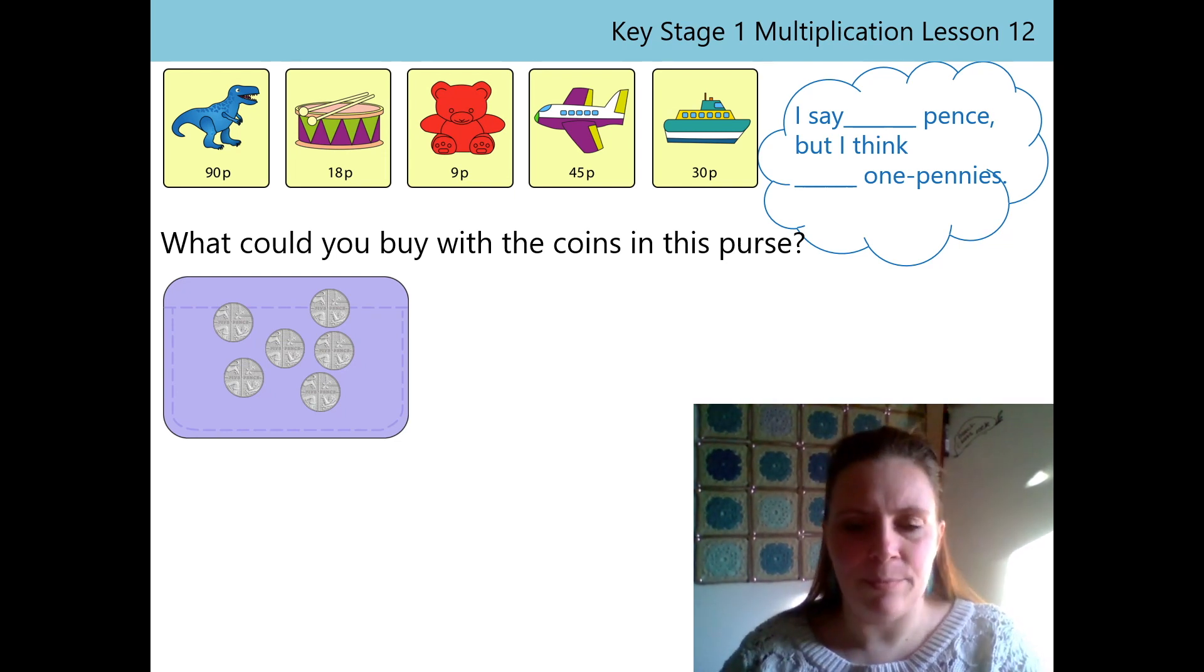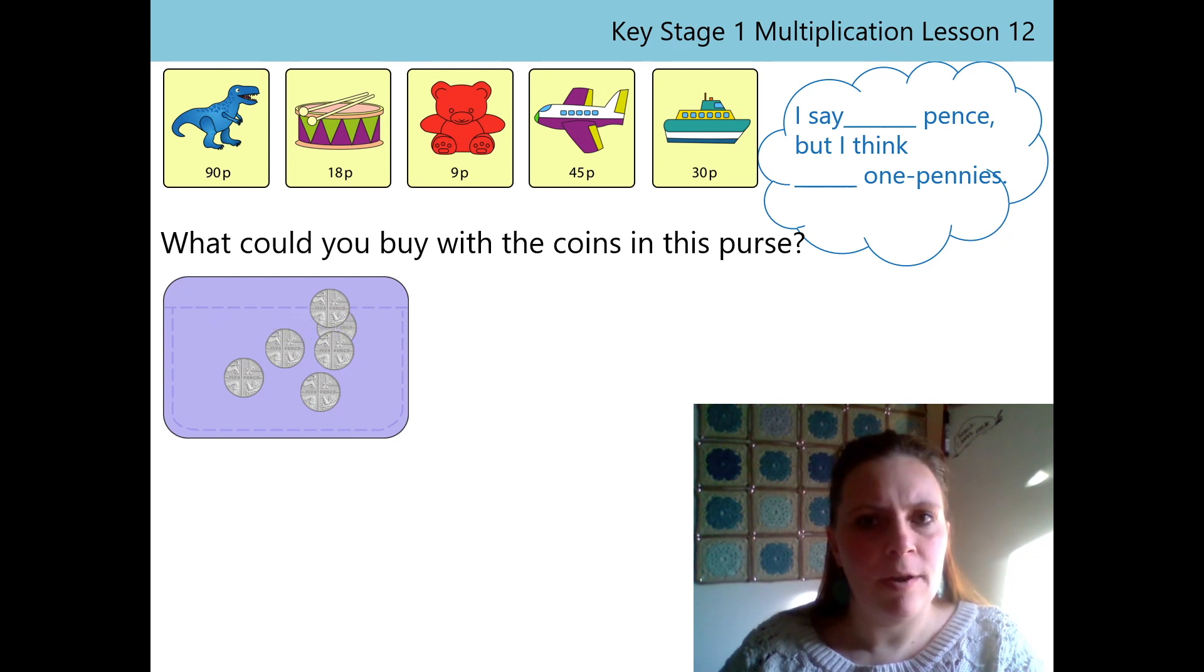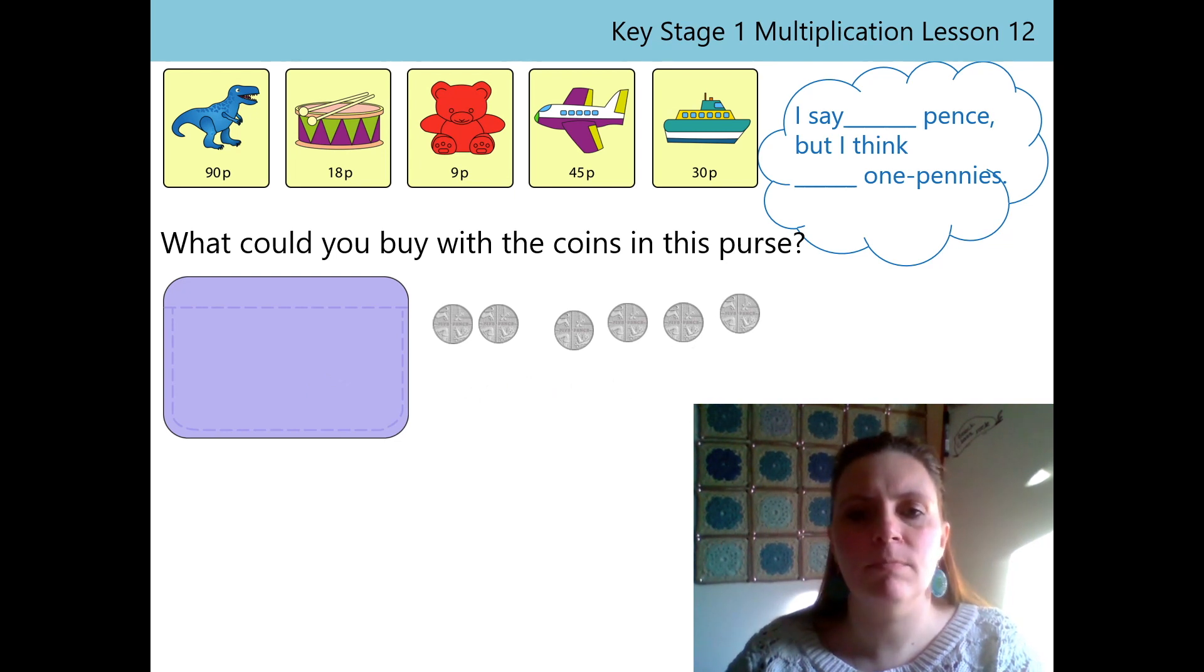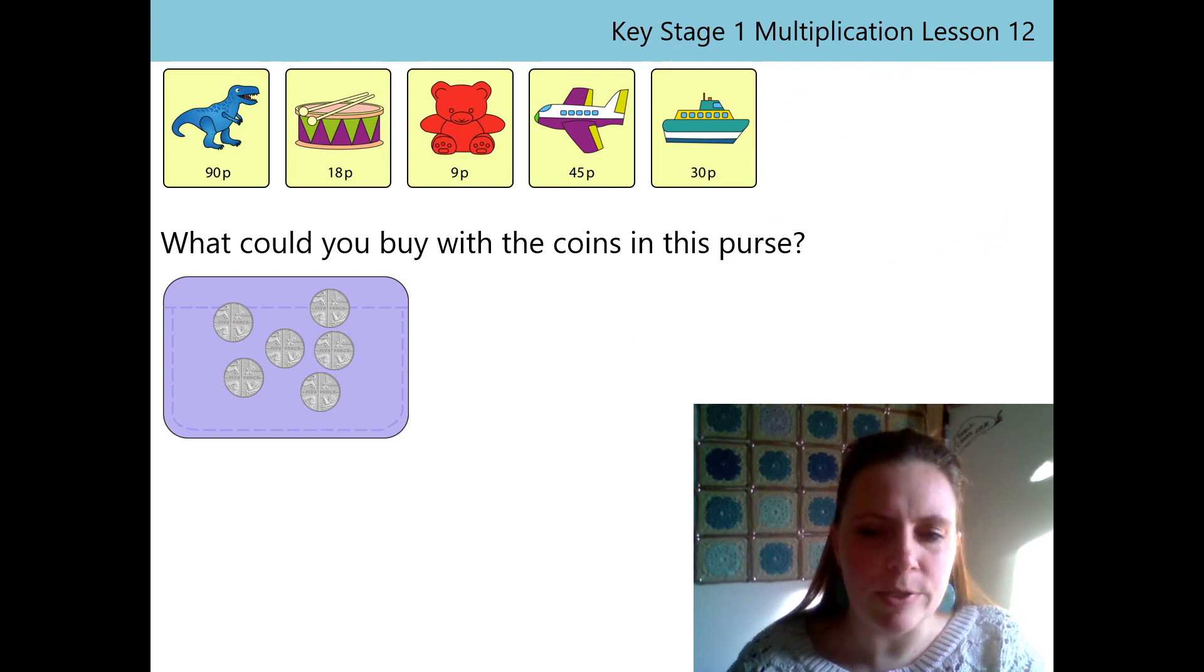I'm going to do some counting so I can work out what I can buy this time. Are you ready? 1, 5 pennies. 2, 5 pennies. 3, 5 pennies. 4, 5 pennies. 5, 5 pennies. 6, 5 pennies. I've got 6, 5 pennies.